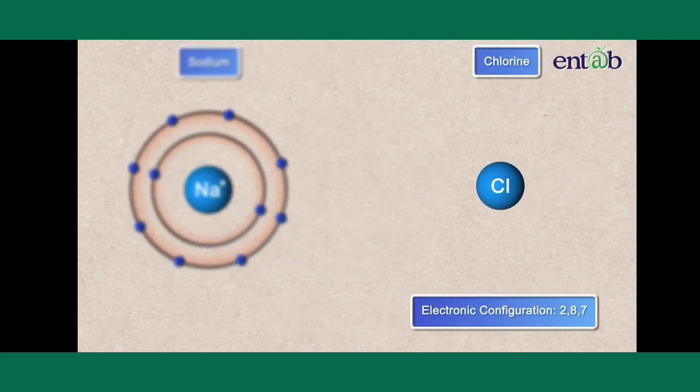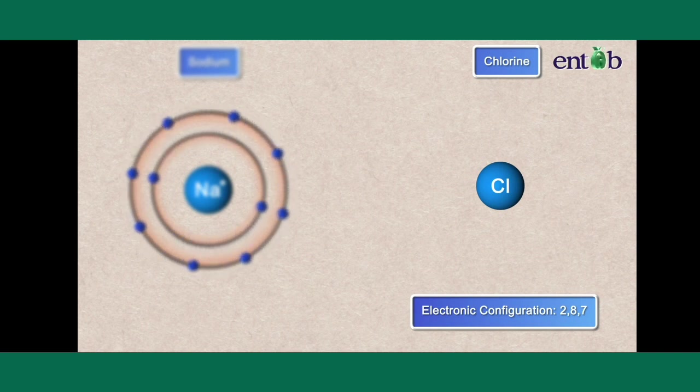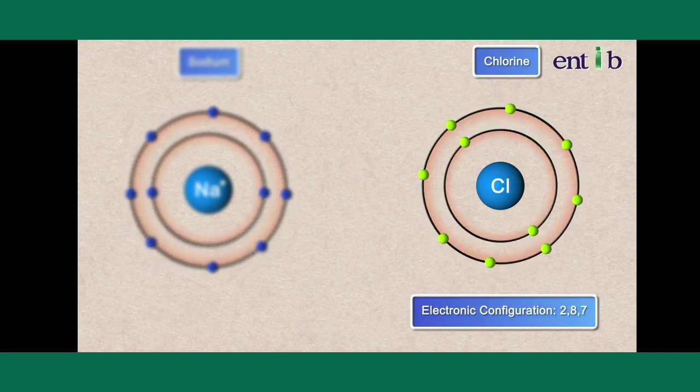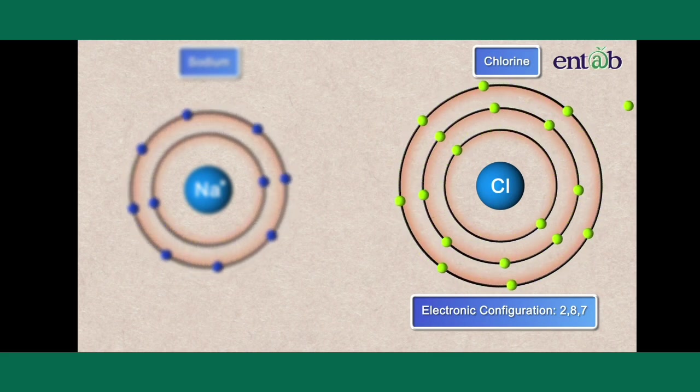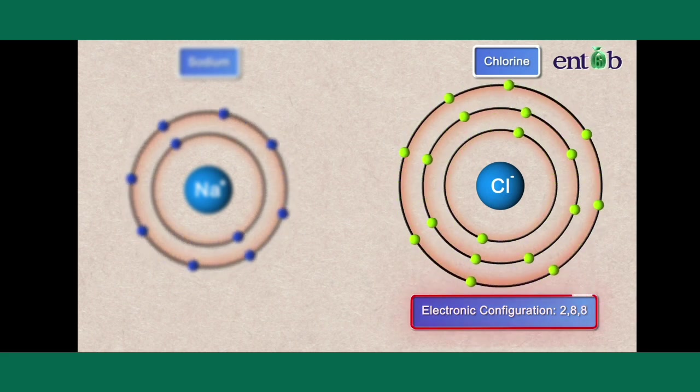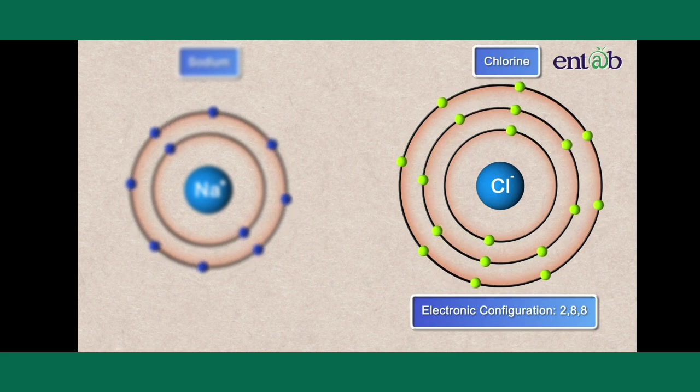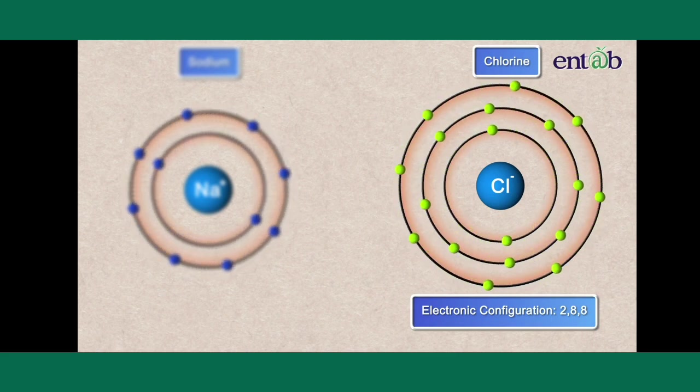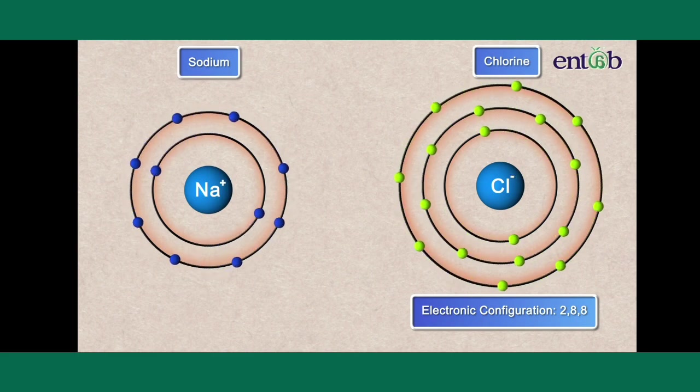Chlorine, on the other hand, has the electronic configuration of 2,8,7. And if it gains an electron, it shall have a configuration of 2,8,8, which is again a stable configuration. It will now carry a negative charge.